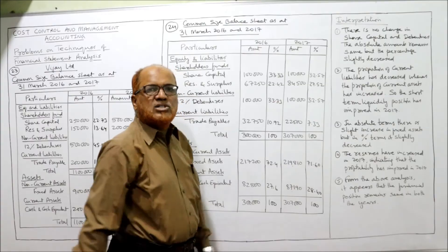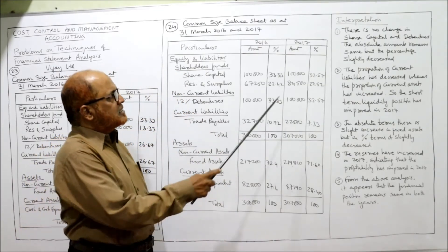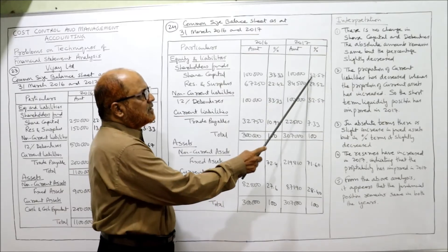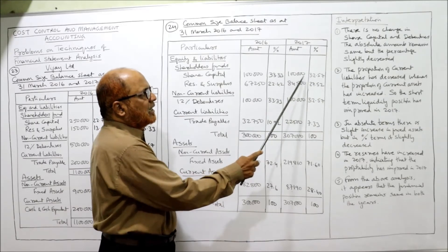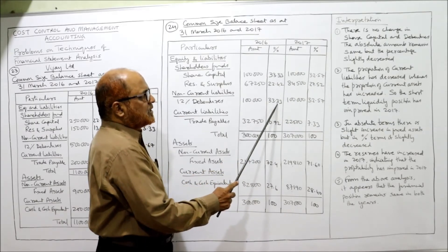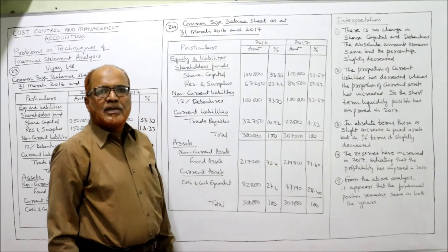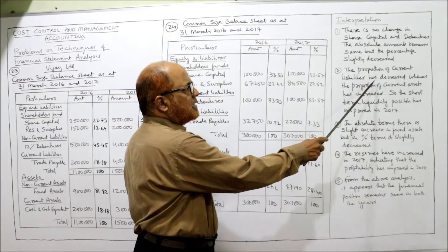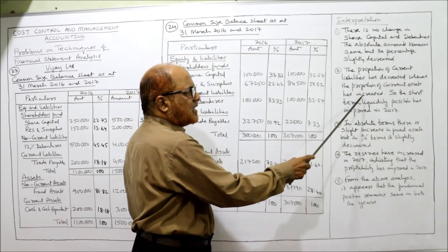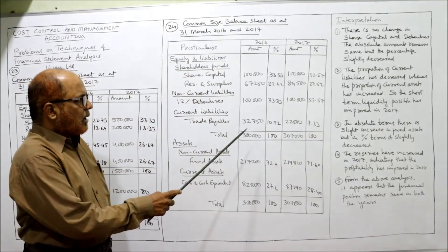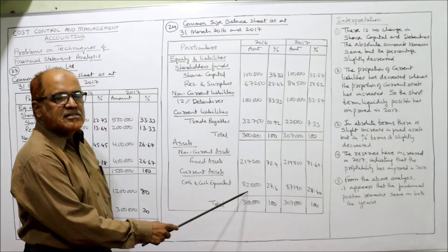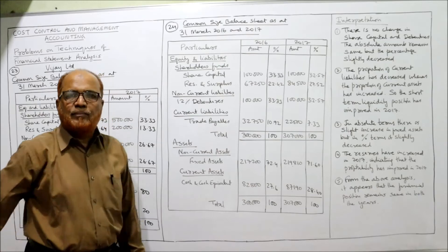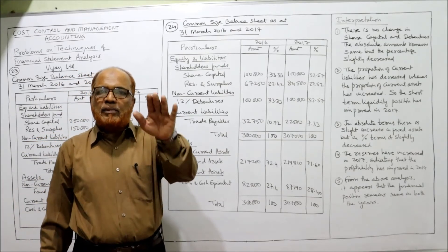The absolute amounts remain the same but the percentage slightly decreased. Here 1 lakh remains 1 lakh, percentage 33.33% has become 32.57% — slightly decreased. Same: 33.33% to 32.57% slightly decreased. The proportion of current liabilities has decreased whereas the proportion of current assets has increased. If you compare: current liability percentage is 10.92%, here 7.33% — the percentage of current liabilities has decreased.